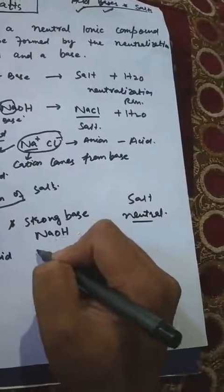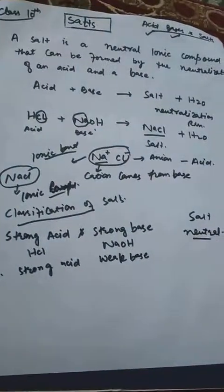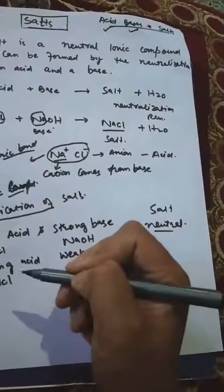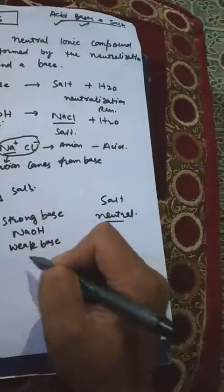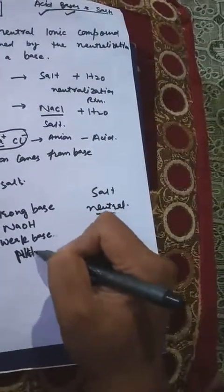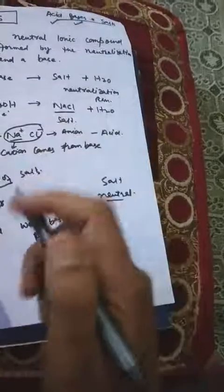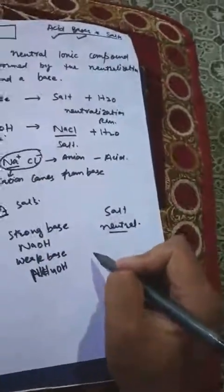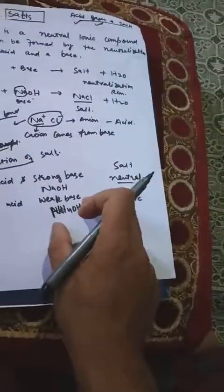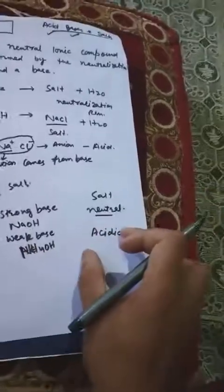If a strong acid and a weak base react, the salt formed will have an acidic character. Why? Because the acid is strong and the base is weak. When strong acid reacts with weak base, the salt will be acidic.